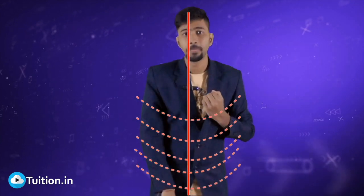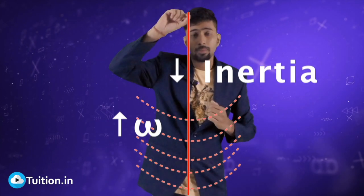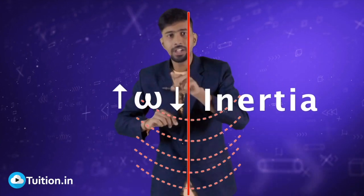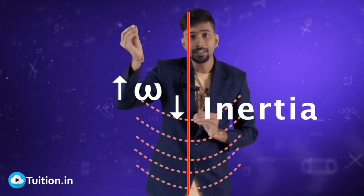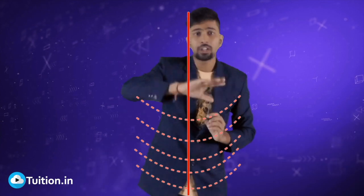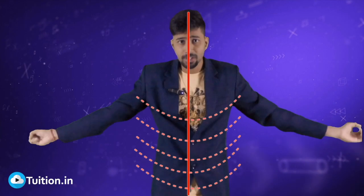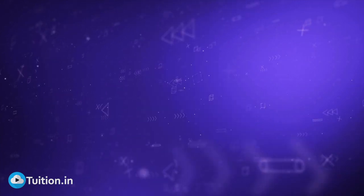If he brings his hands closer, the mass has come closer to the axis of rotation. In this case, the moment of inertia decreases. If moment of inertia decreases, omega has to increase such that the product of I and omega remains constant as before. So if a person brings his arms closer to his body, he starts rotating at a faster rate. This is a real life example of how angular momentum is conserved. This was the principle of angular momentum conservation.